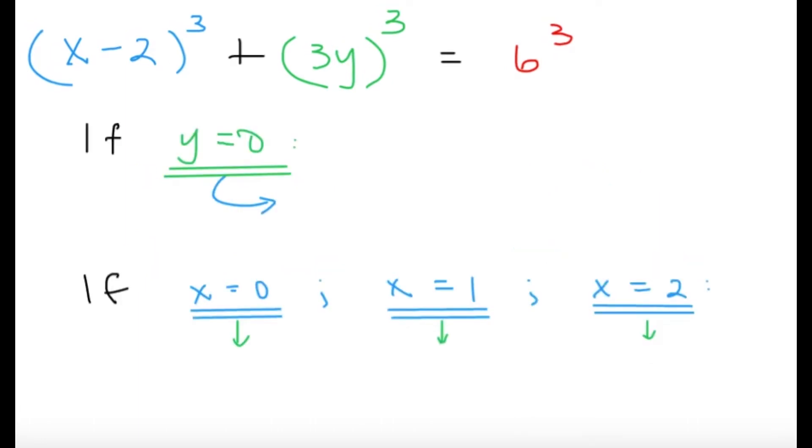Let's try the y = 0 case. If y = 0, we'll just imagine this not being here anymore. So (x - 2)³ is going to give us 6³, so I think it's pretty obvious for us to say x - 2 would equal 6, and that's going to give us x = 8. So apparently (8, 0) is a solution.